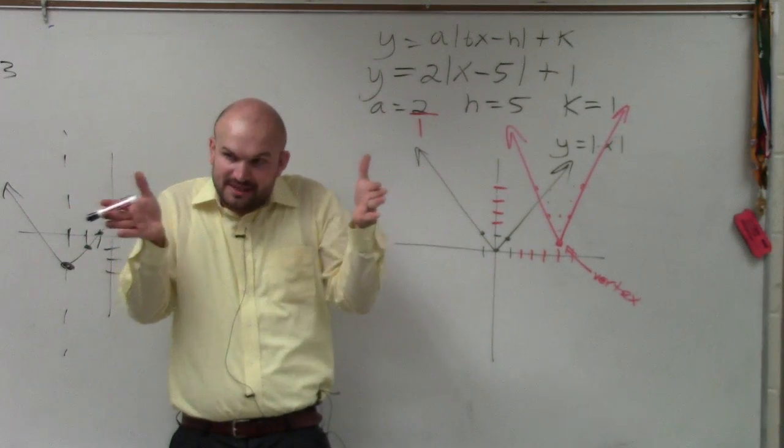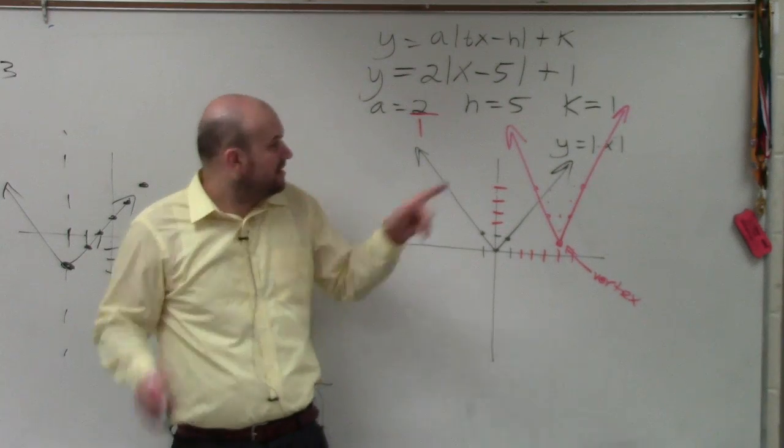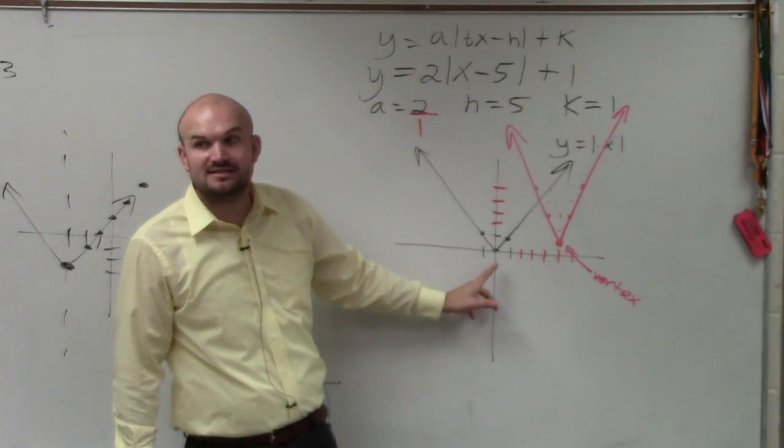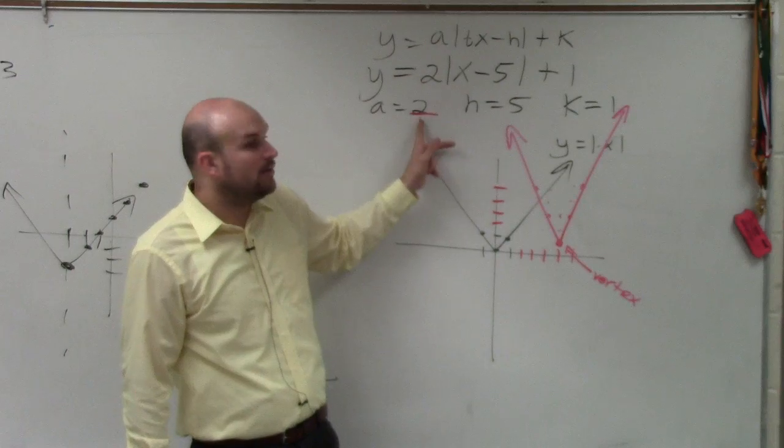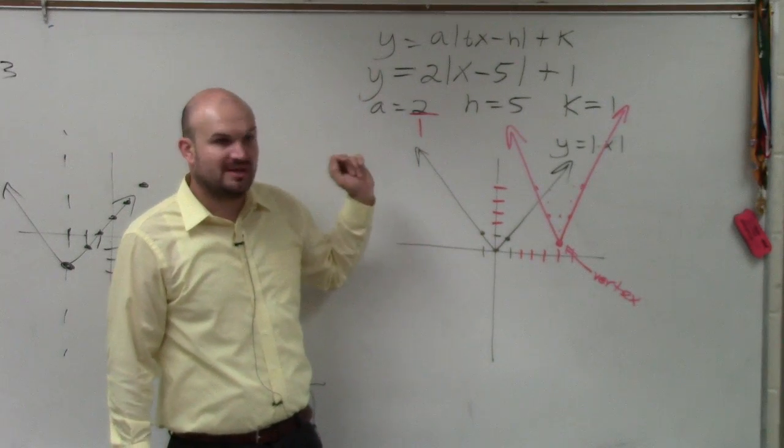And the 2 horizontally compressed my graph by changing the slope of the lines. Instead of 1 over 1, it's now up 2 over 1. Does everybody see that?